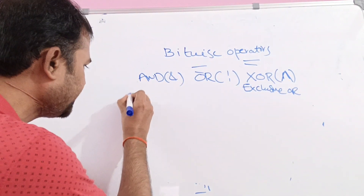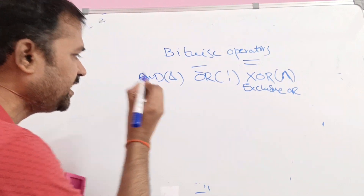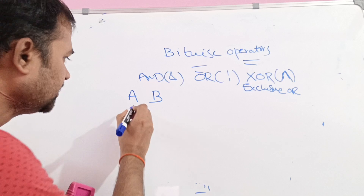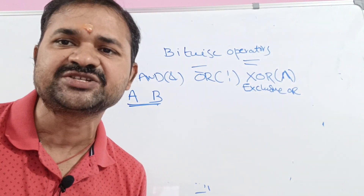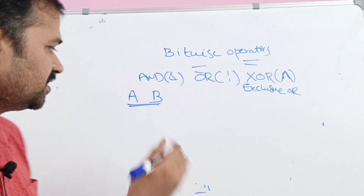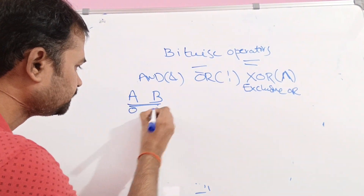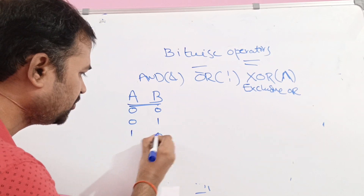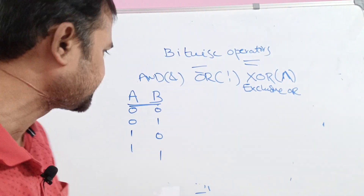In the truth table, we have first operand A and second operand B. With two bits, we get 2 power 2, which is four combinations: 00, 01, 10, and 11.